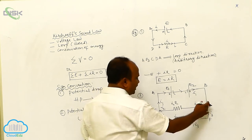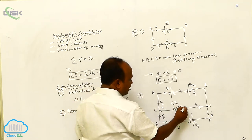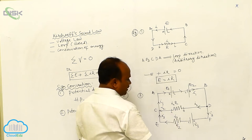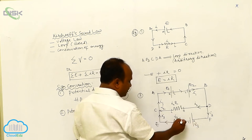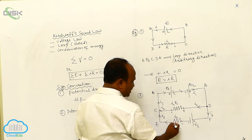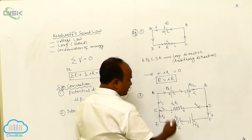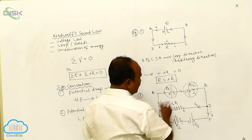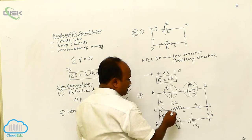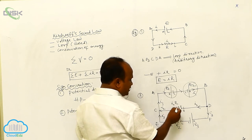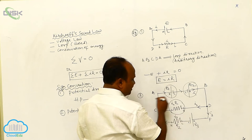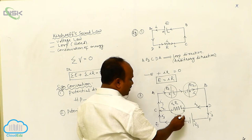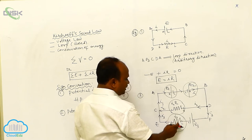Current is traveling such that this end is called the higher potential point and this end is called the lower potential point. Here, E1 and E2 are the two EMFs. Across resistance R1, the potential difference is I2 times R1. Across resistance R2, the potential difference is I3 times R2.